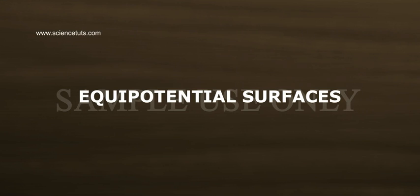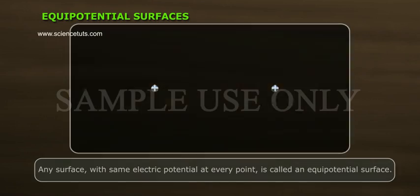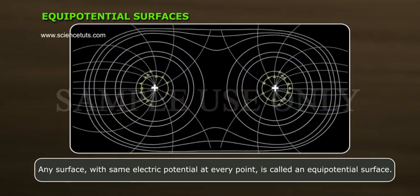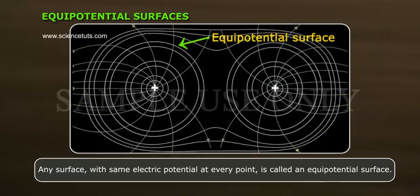Equipotential surfaces. Any surface with same electric potential at every point is called an equipotential surface.